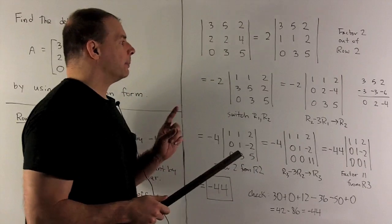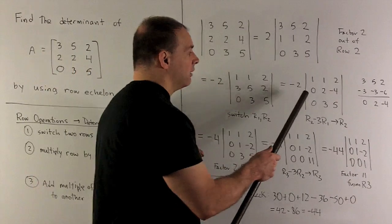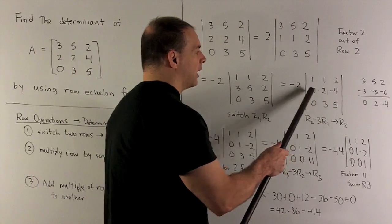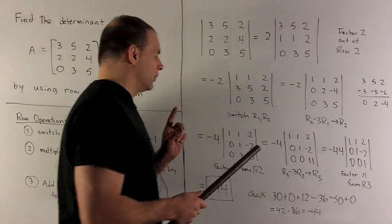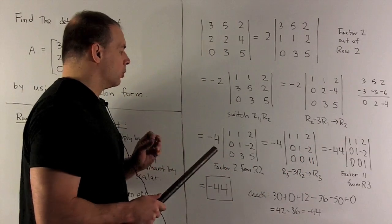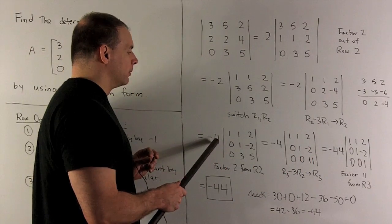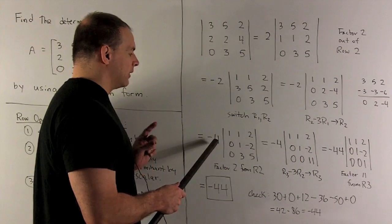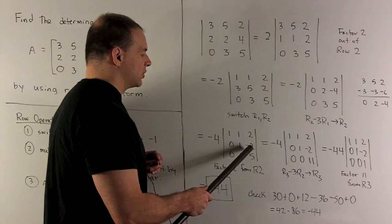Now we note that we can again factor a 2 out of our middle row. So we'll do that, which puts a minus 4 out in front. Then we have 0, 1, minus 2 in the middle row.